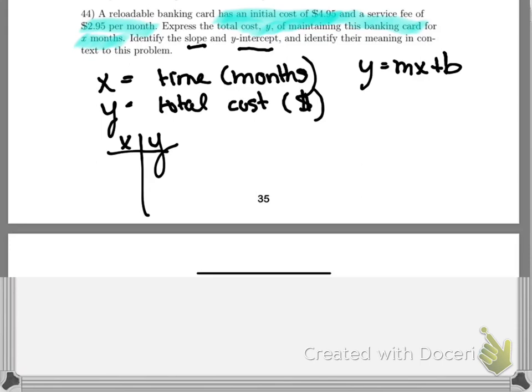So with this initial cost, remember the word initial is kind of a magical word for starting. After zero months, the very first day that you get this bank card, the cost is $4.95. And then it says every month after that, we're adding $2.95.